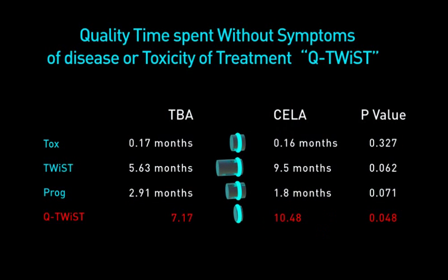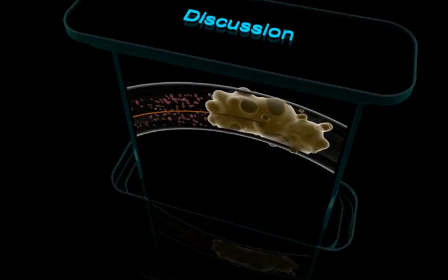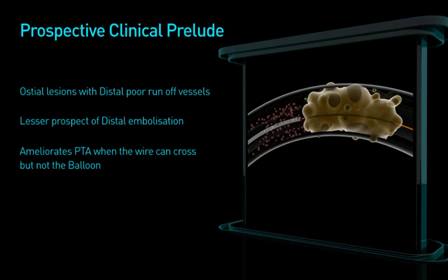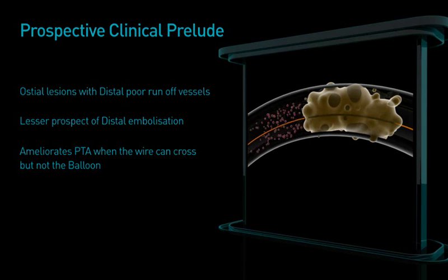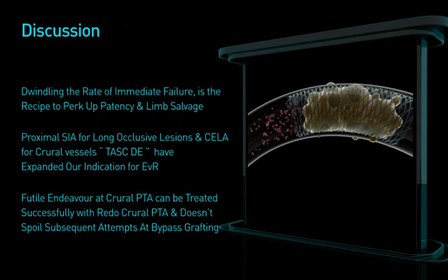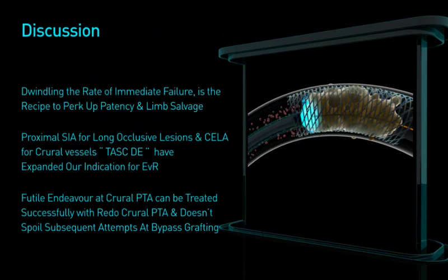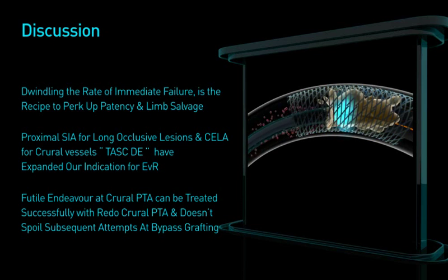Quality of life was significantly enhanced with laser. Osteolesions with distal poor runoff vessels are better managed with laser, with less prospect of distal embolisation. Laser ameliorates PTA when the wire can cross but not the balloon. Reducing the rate of immediate failure amplifies patency and limb salvage, and tibio-crural PTA can successfully treat previous failed endeavours.